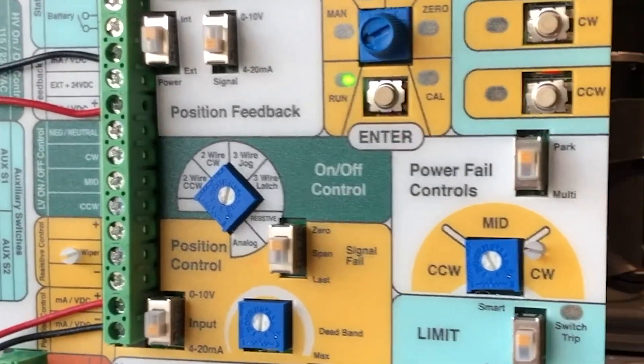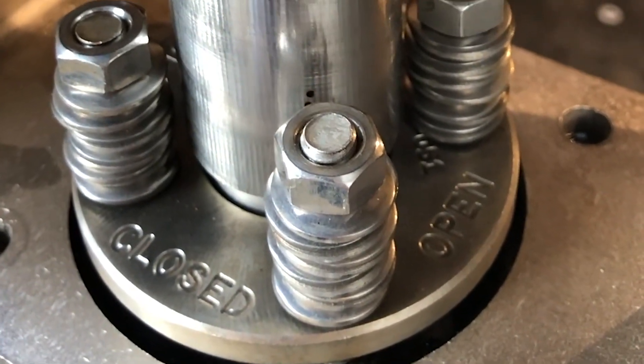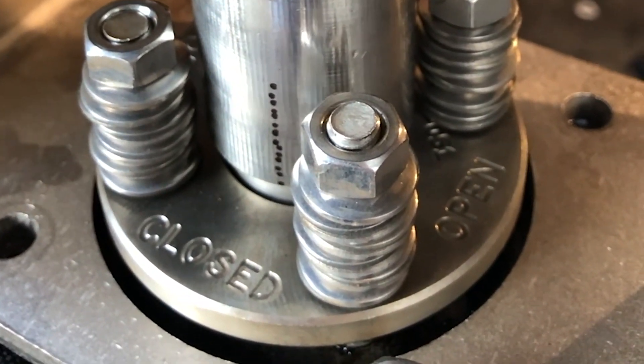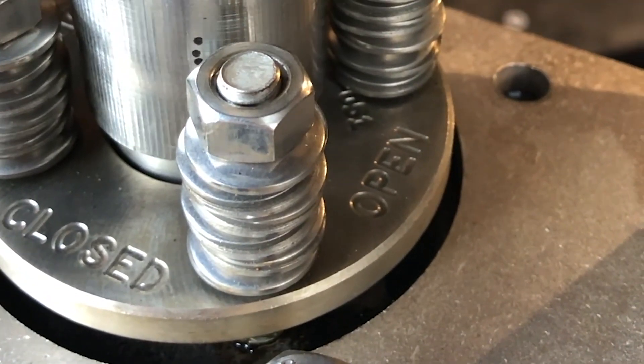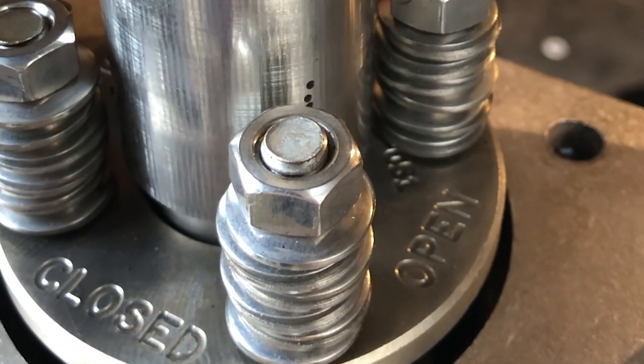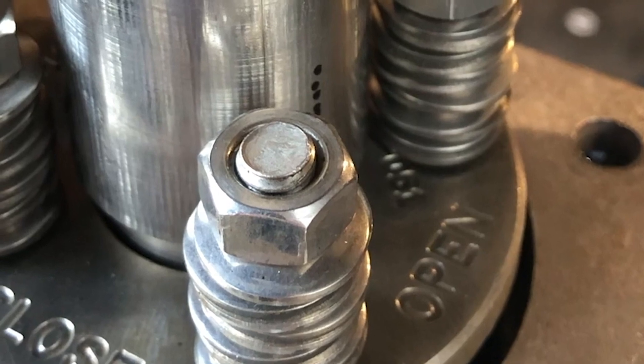The run LED is on and now we can simulate our four to 20 milliamp signal to verify that we get the correct orientation whenever we apply that milliamp signal. So right now I'm going to apply four milliamps, should be in the closed position which it did. Next I'm going to drive it back open to 20. As you can see on your valve, your valve should go to the fully open position with 20 milliamps applied.